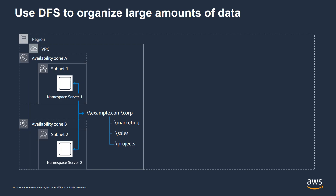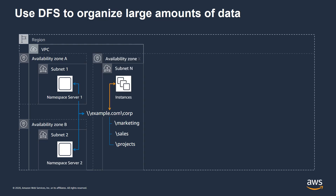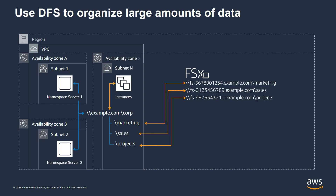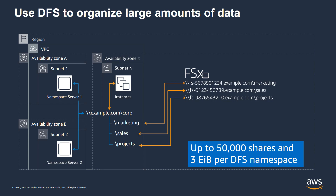Underneath that hierarchy, you have the file shares, and each of those can be accessed from instances in the availability zone via the DFS namespace. Behind the scenes, those shares are mapped to Amazon FSx for Windows File Server file systems — mapped to three different file systems as shown in the demo. This allows you to scale the size and capacity of Amazon FSx for Windows File Server, since each file system can have up to 64 terabytes. You can map up to 50,000 shares, getting about three exabytes of storage capacity per DFS namespace. You can also set up multiple DFS namespaces to scale the system as large as you need.